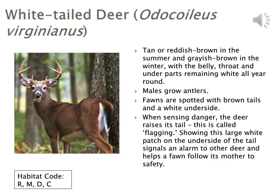White-tailed deer are by far one of the more common ungulates we'll see in southern and central Ontario. They are tan or reddish brown in the summer and greyish brown in winter. Males grow antlers; females do not. Fawns are spotted with brown tails and a white underside. They are called white-tailed deer because the tail, which goes up in the presence of danger, is white — signaling other deer to flee.